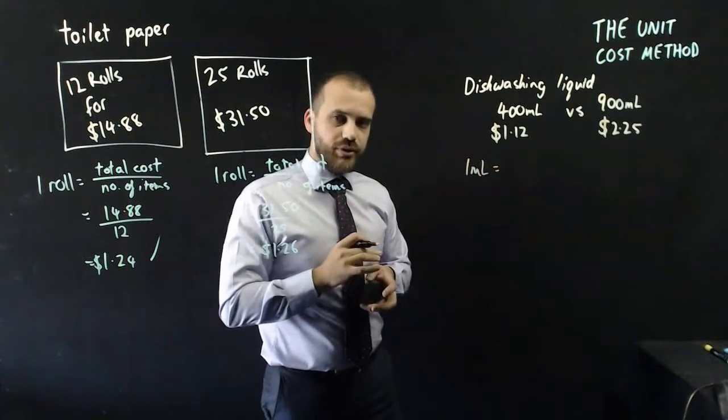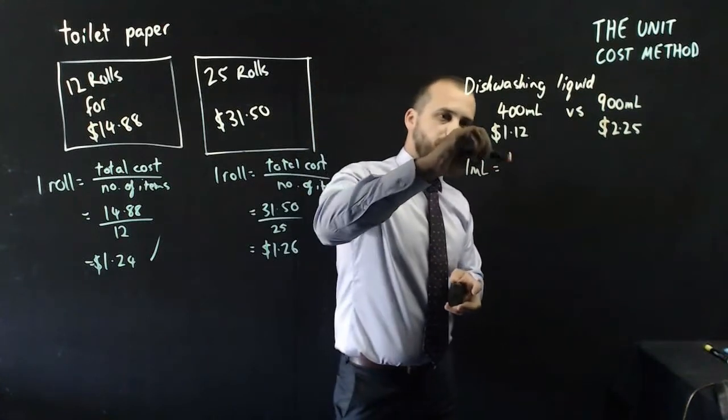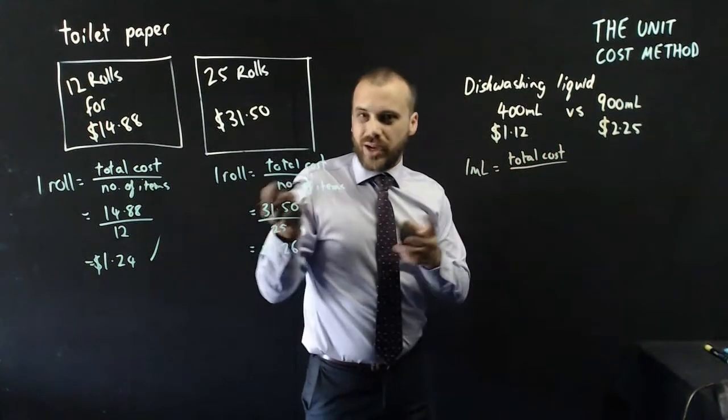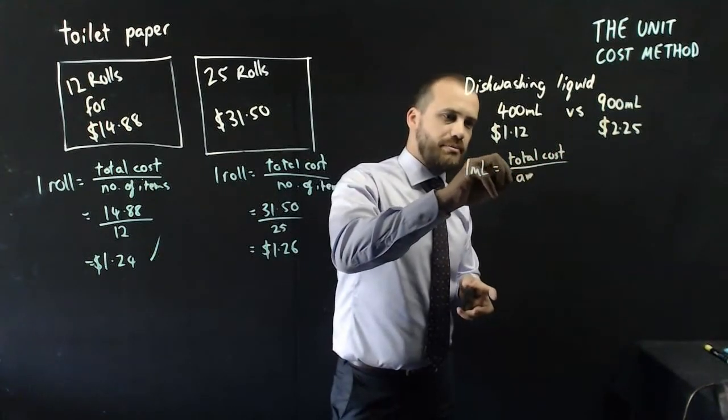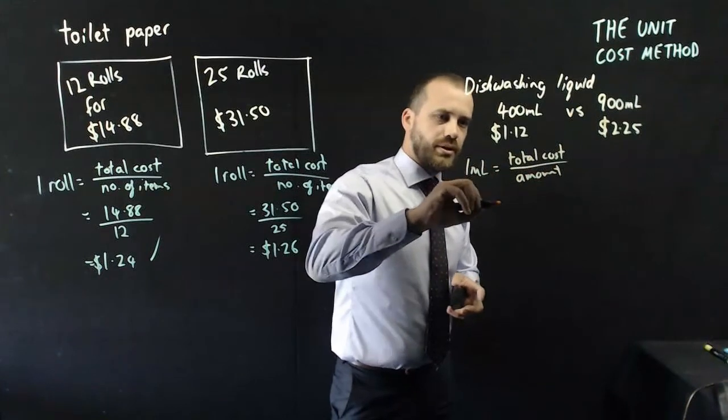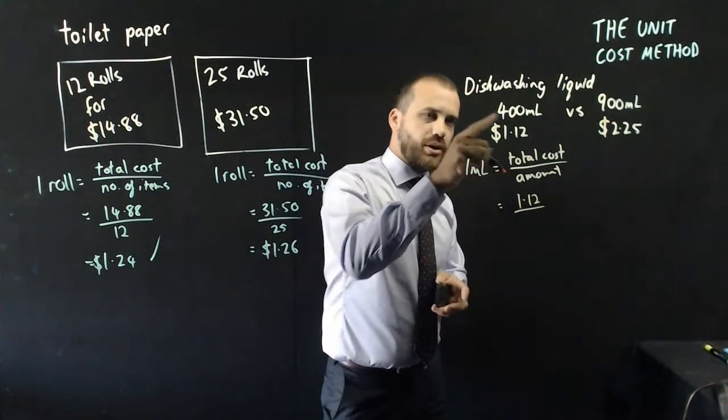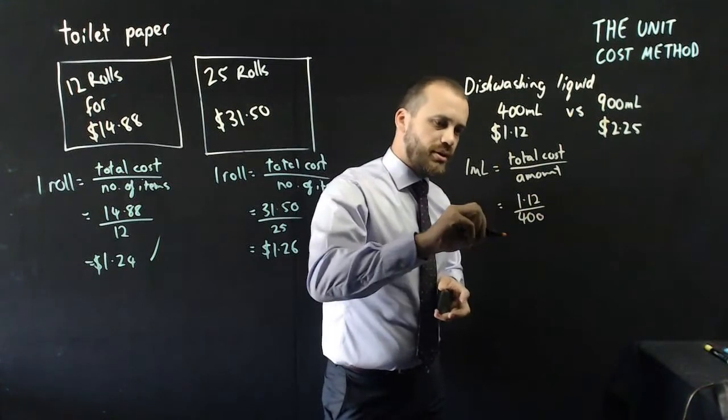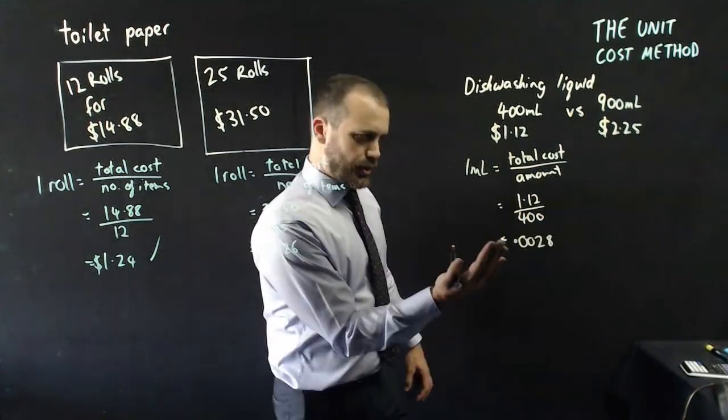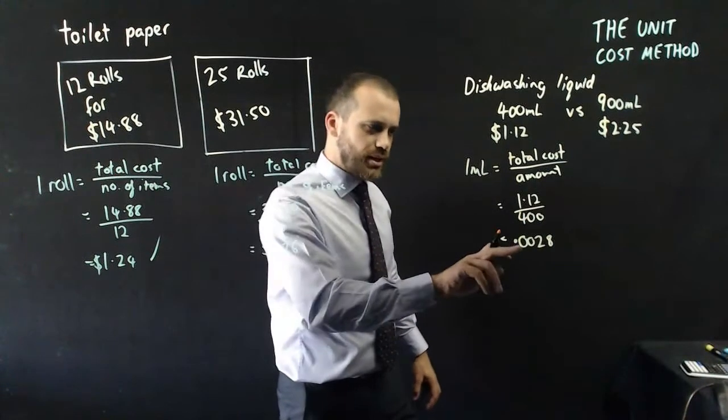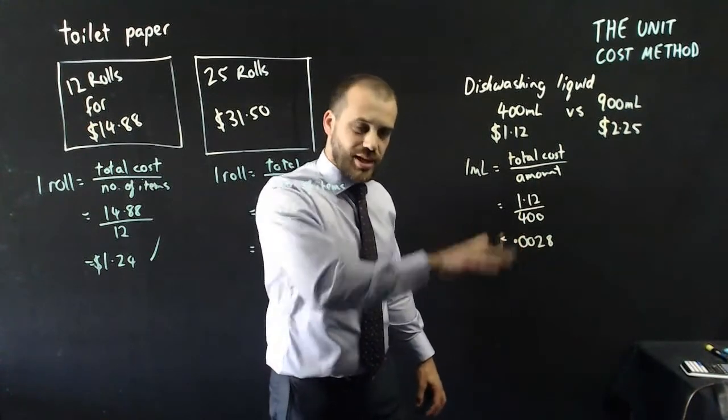One mil of dishwashing liquid is going to be equal to the total cost over the, not number of items, but in this case, the amount. So the total cost is $1.12, and we divide that by the amount, 400, and we'll get an answer. In this case, 0.0028, that's a very small number here, it's less than a cent.